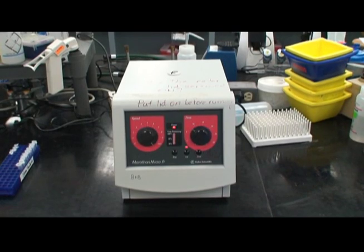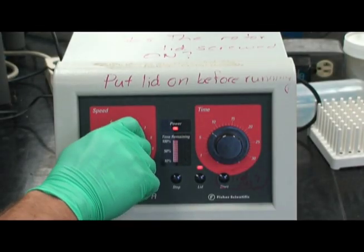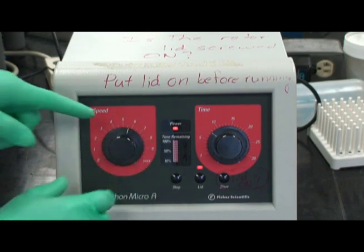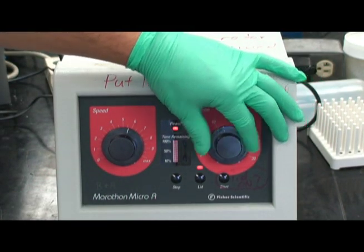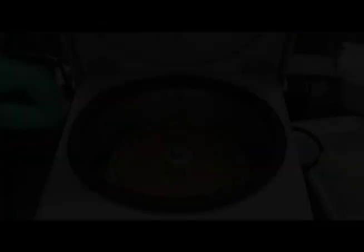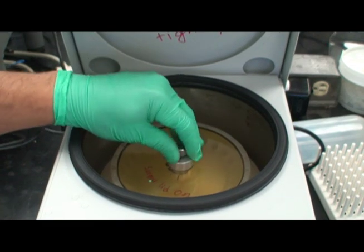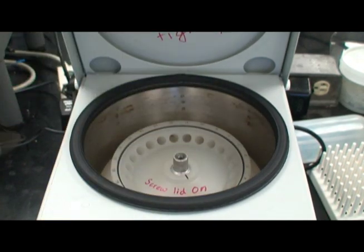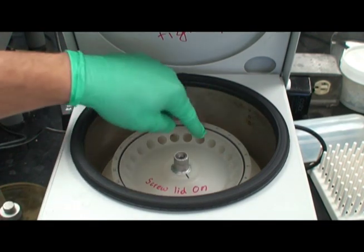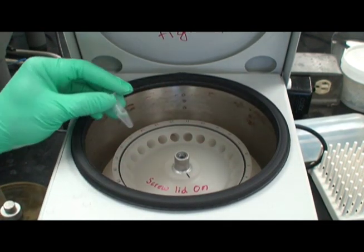This is another microfuge device. As you can see, the speed and time can be adjusted. After unscrewing the safety lid, it is possible to insert tubes into the slots. Once again, they are numbered for easy counterbalancing.